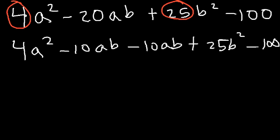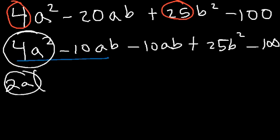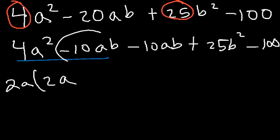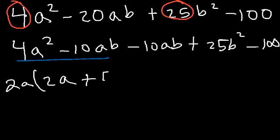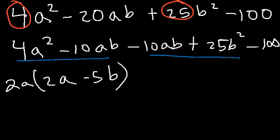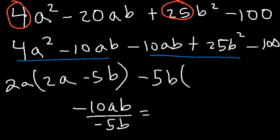We still have the minus 100 on the right side. Now factor by grouping: in the first two terms, take out the GCF of 2a. Dividing 4a squared by 2a gives 2a, and negative 10ab divided by 2a gives negative 5b. In the next two terms, the GCF is negative 5b. Negative 10ab divided by negative 5b gives 2a, and 25b squared divided by negative 5b gives negative 5b.